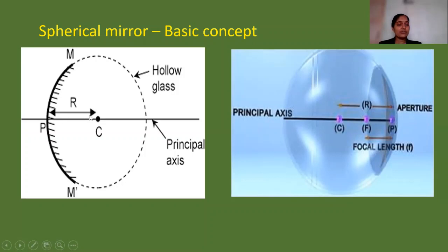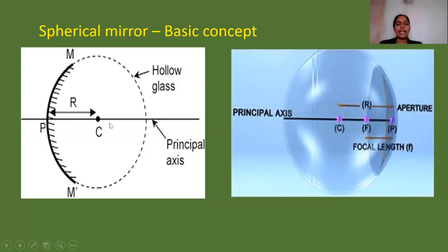The radius of curvature R is the distance from center C to pole P. The principal axis passes through this center. The focal length F is related to the radius of curvature by the basic relation F equals R divided by 2. All of you know this relation.